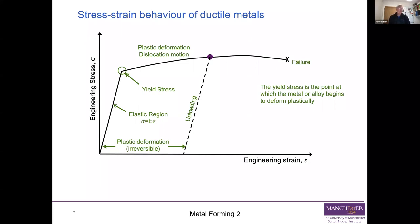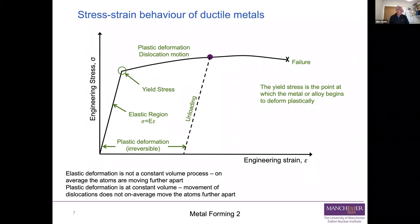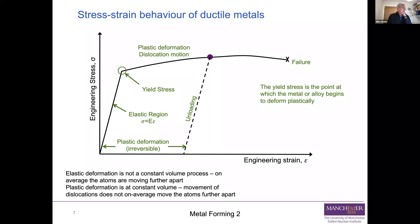At the end of a tensile test, deformation localises into a neck, it becomes unstable, and it fails. A couple of things to remember: elastic deformation is not a constant-volume process — Poisson's ratio for steel is 0.3, so volume slightly increases when pulled elastically because the bonds move further apart. Plastic deformation, however, is a constant-volume process; Poisson's ratio is 0.5. Movement of dislocations that allows shape change does not on average move atoms further apart. We take advantage of the fact that plastic deformation is constant volume in simple forming calculations.